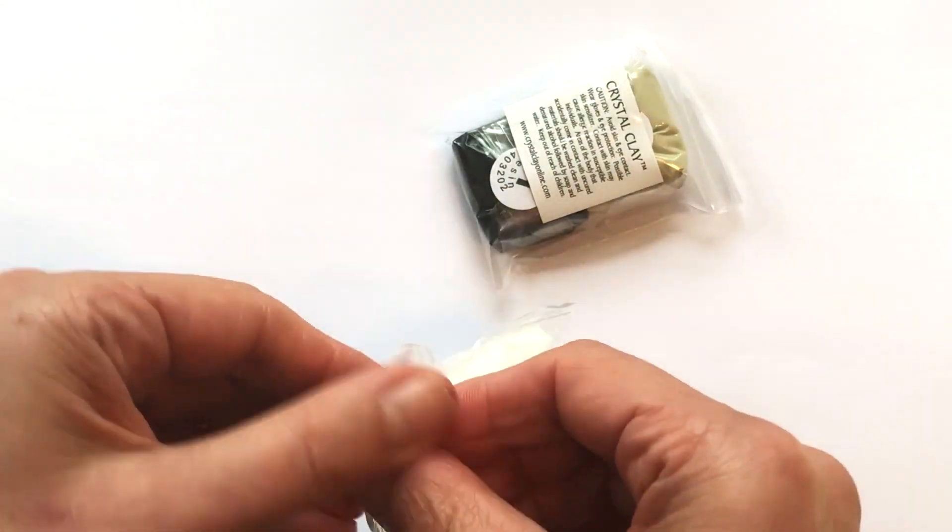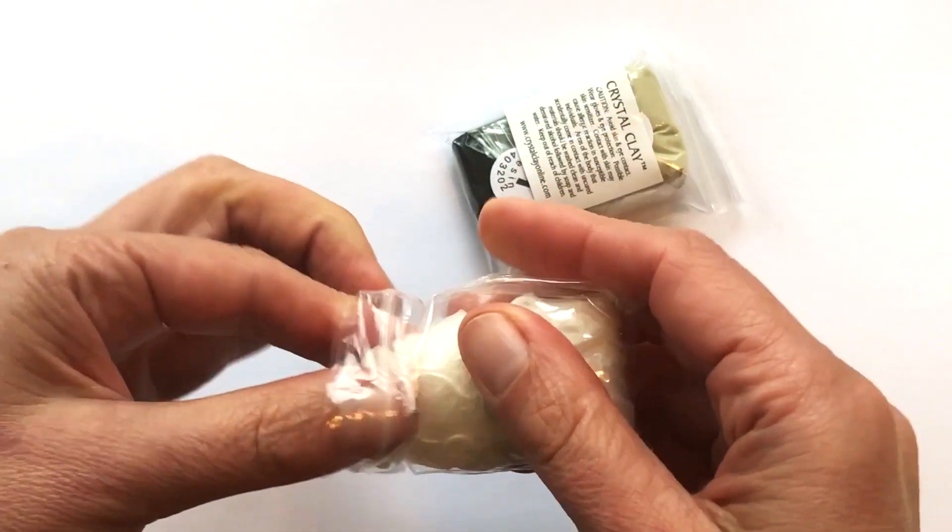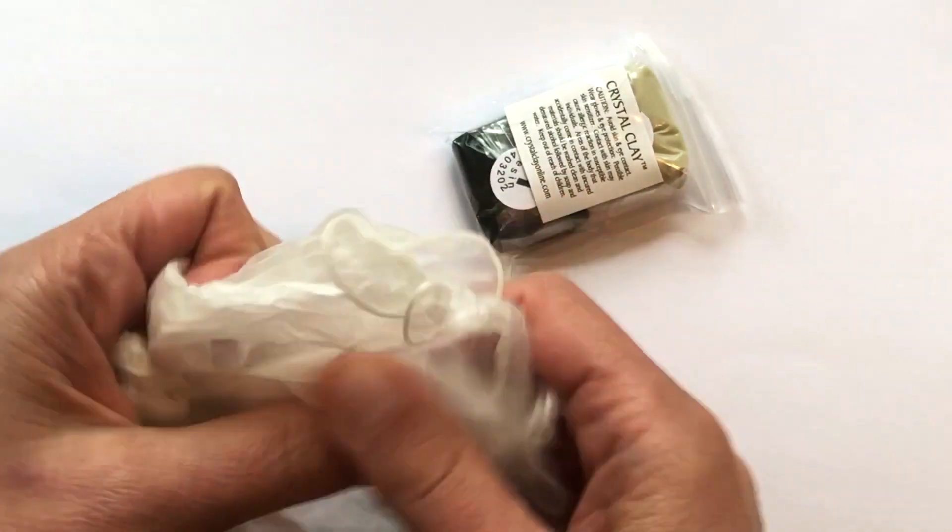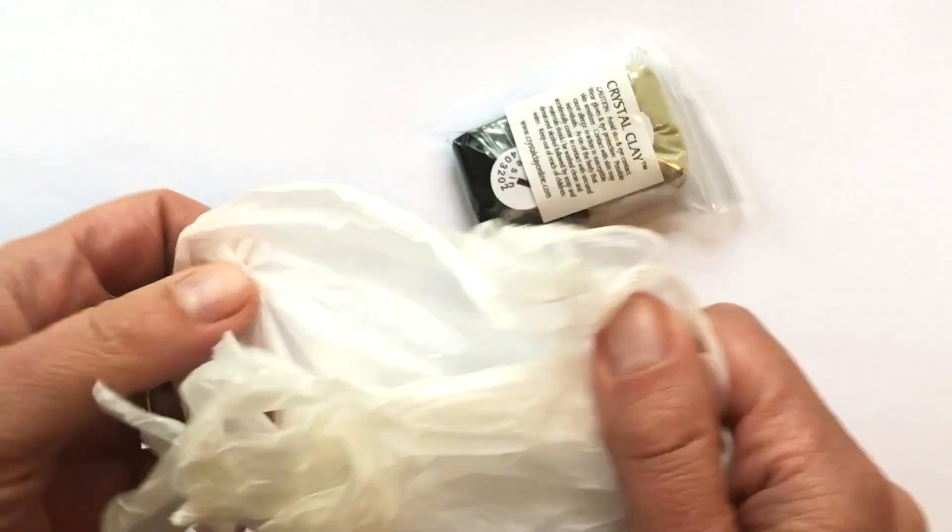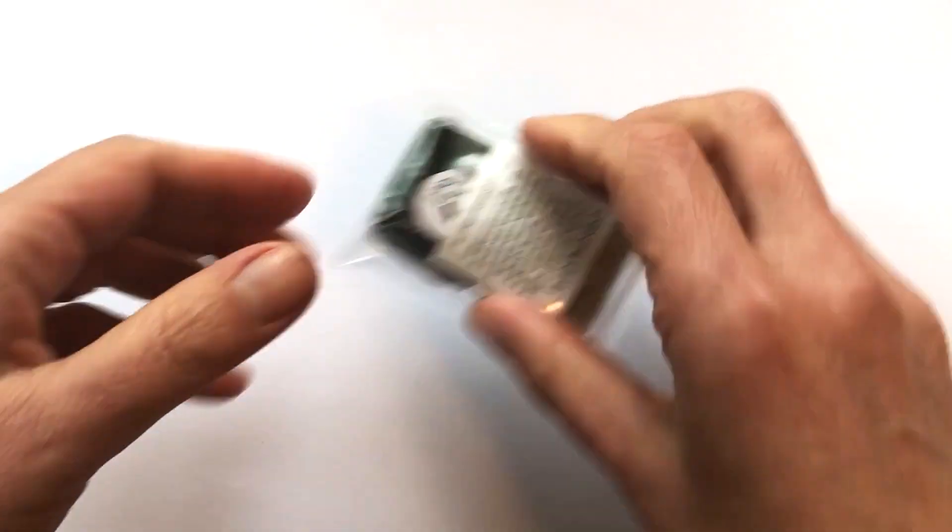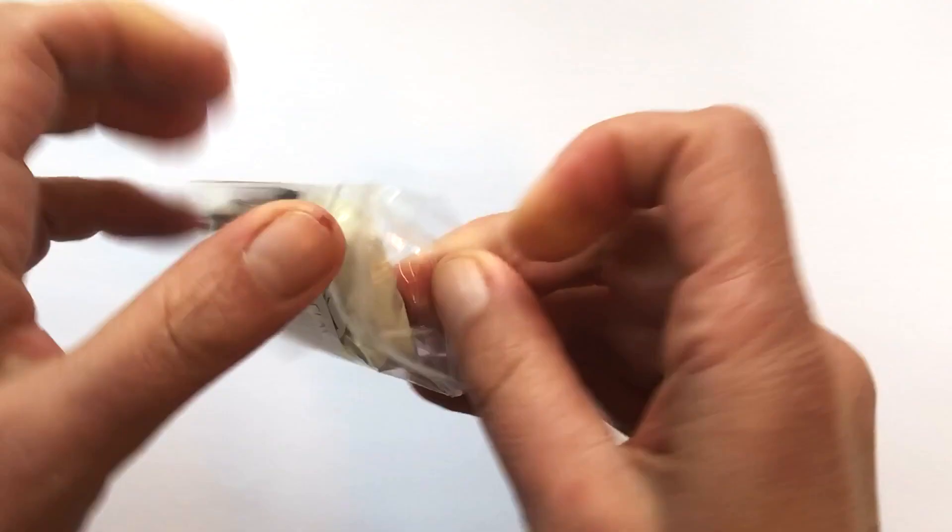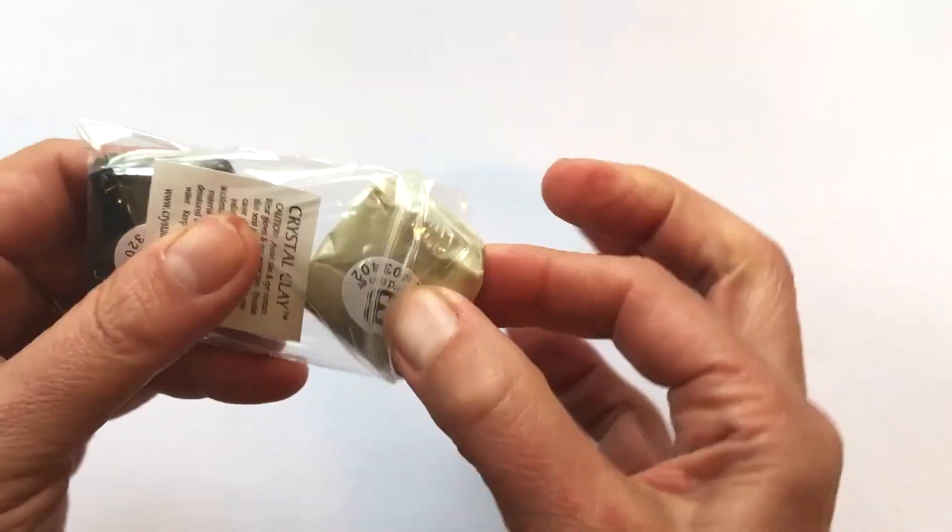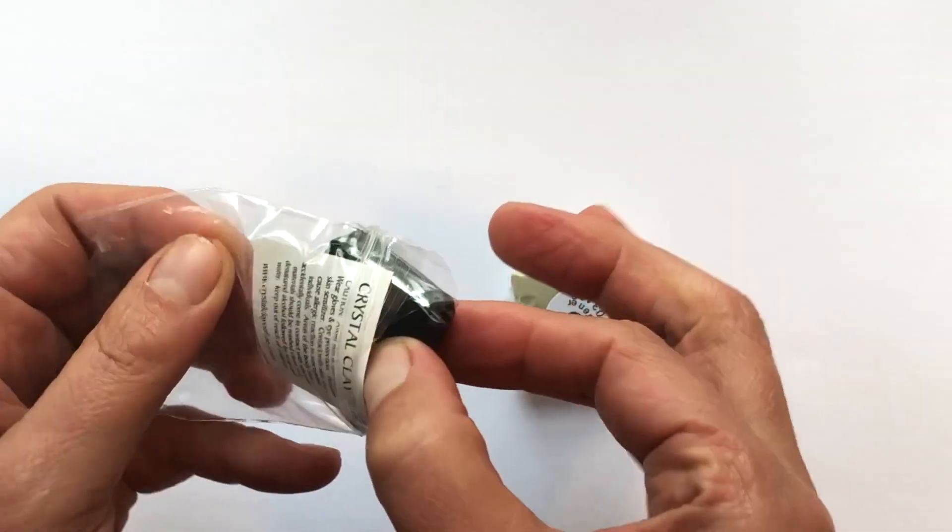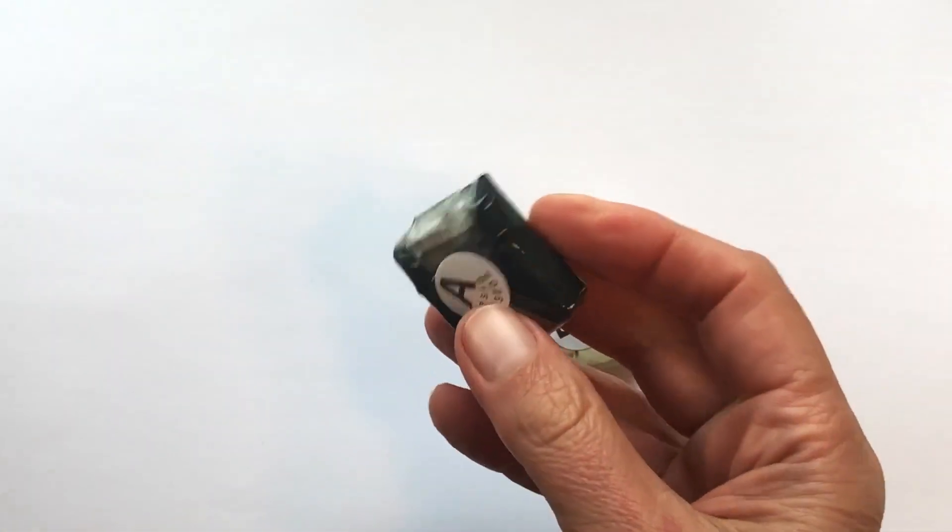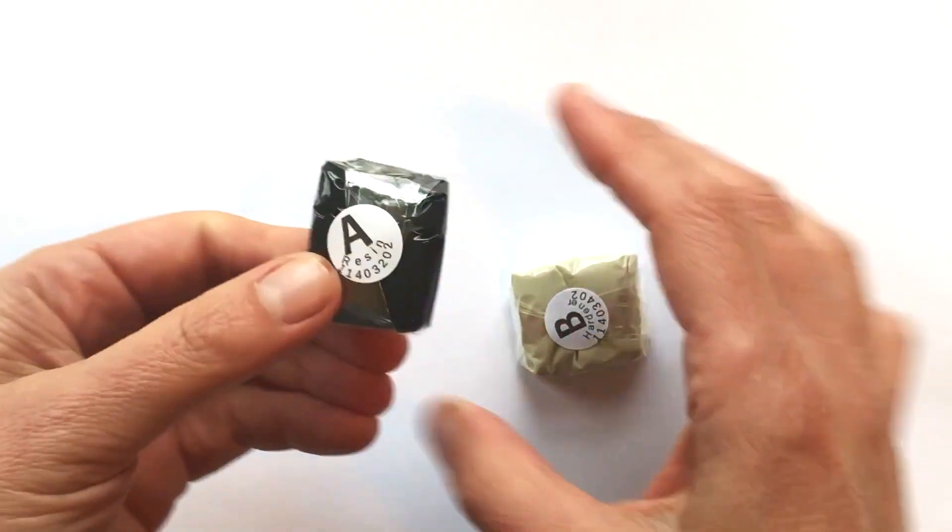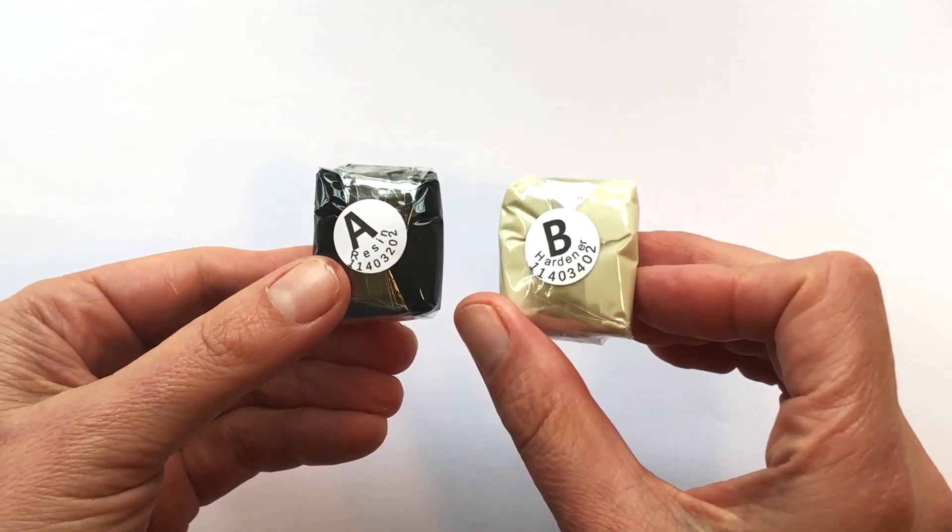Go ahead and open up the gloves and you can open up the two packages of crystal clay. Part A is always going to be the color that you're working with. This one's black and part B is going to be the resin itself.